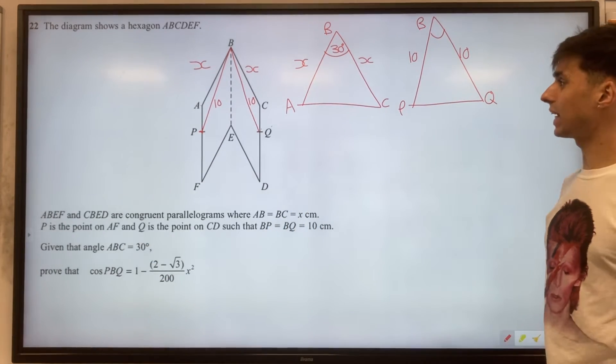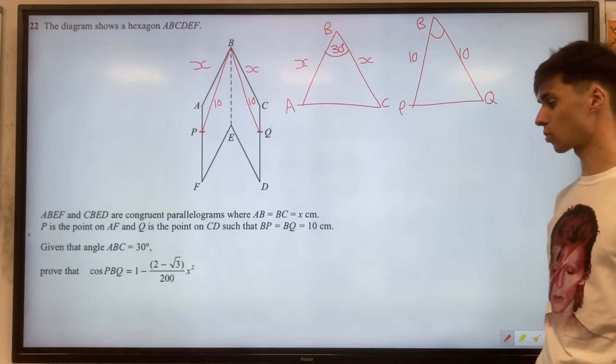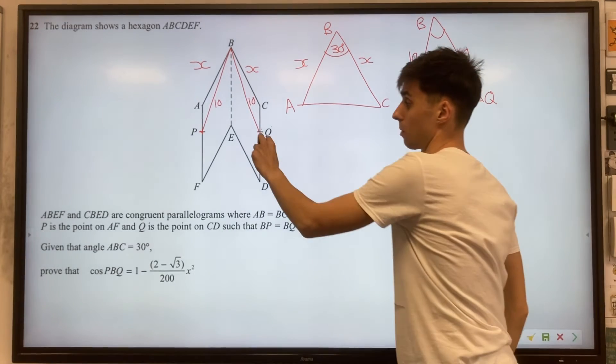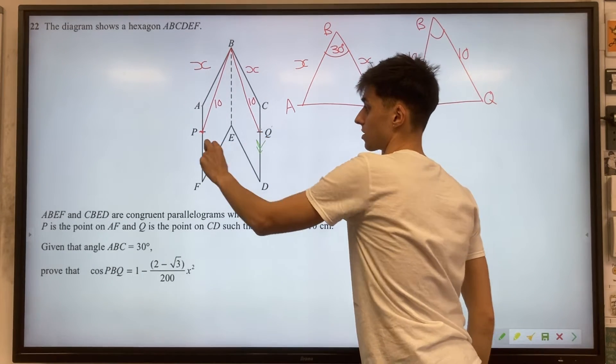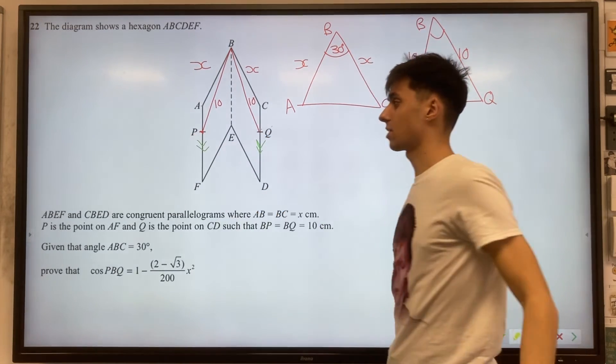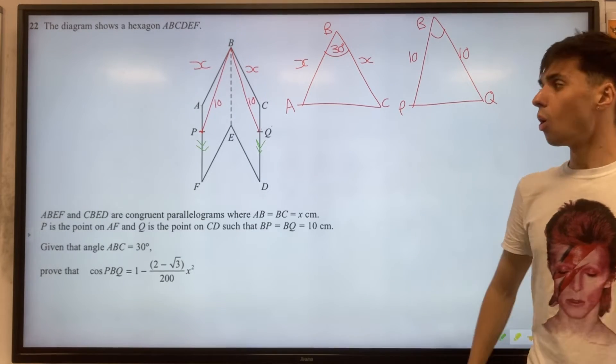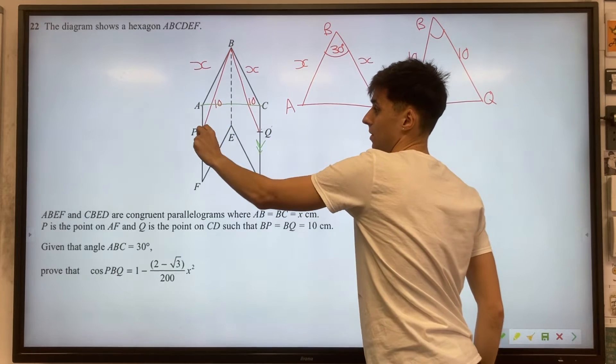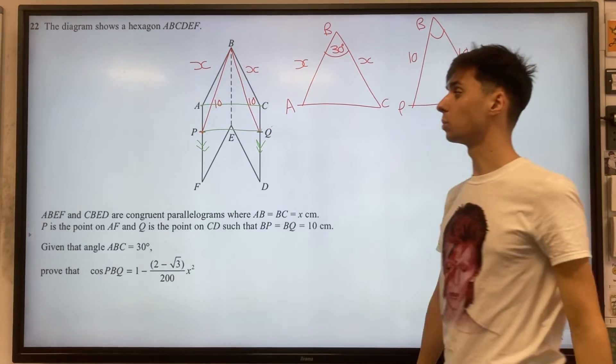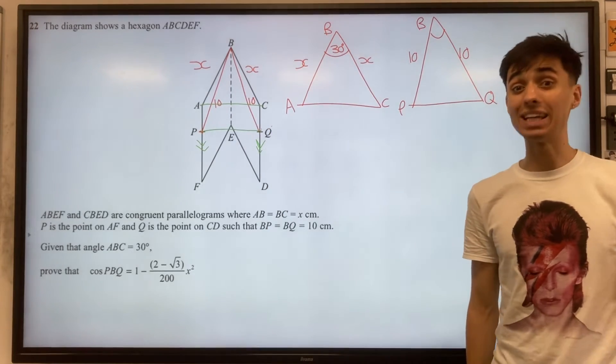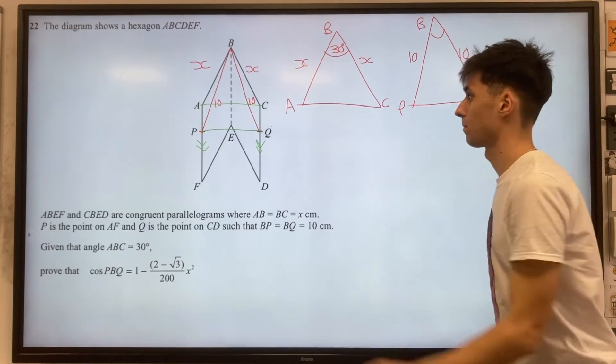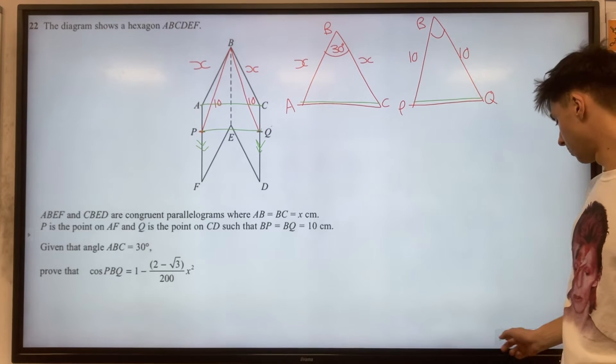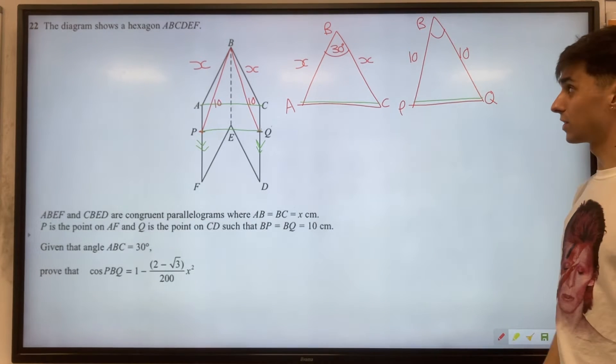But we know something really important about these two triangles. And this is a property that's coming from the fact that we've got parallelograms. So this side here and this side here are parallel. What that means for us is that the base of this triangle AC and the base of this triangle PQ must be equal to one another. So this line and this line must be equal. That's the basis for this question.